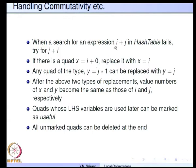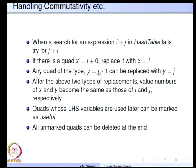We do not even have to enter it into the hash table separately; we always search both i+j and j+i in the hash table, and if one of them is found we assume equivalence. If there is a quadruple x = i+0, it can be replaced with x = i. Similarly, j*1 can be replaced with j, so the assignment becomes y = j. In both these types of replacements, the value number of x becomes the value number of i and value number of y becomes the value number of j.